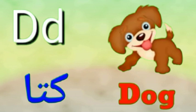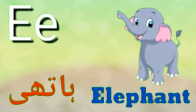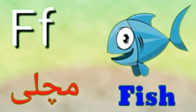D is for Dog, Dog means Kutta. E is for Elephant, Elephant means Hathi.